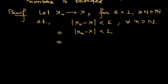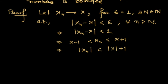We have |x_n| ≤ |x| + 1, which is also ≥ |x| - 1. So |x_n| < |x| + 1 for all n greater than N.